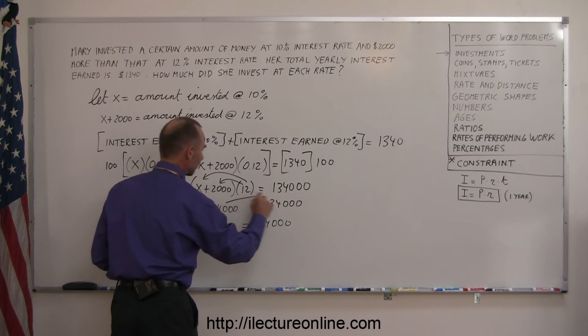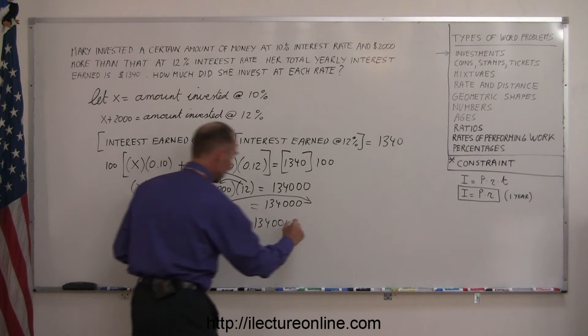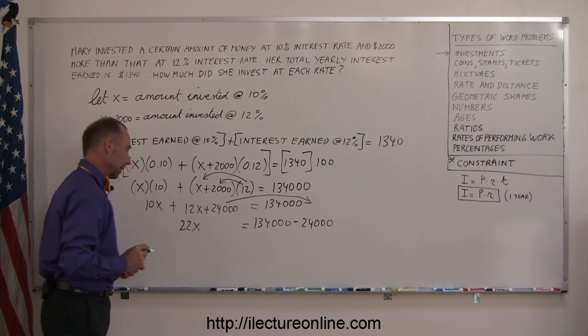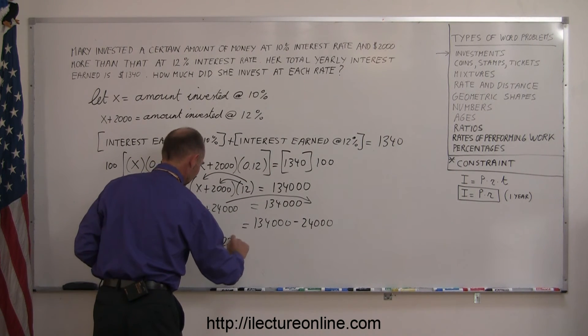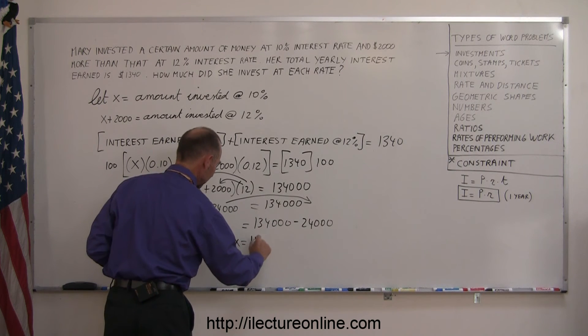on the right side, 134,000. Then I move the 24,000 to the right side. When I cross the equal sign, I change the sign, so that becomes minus 24,000. I combine like terms: 22x equals 134,000 minus 24,000, which is 110,000.